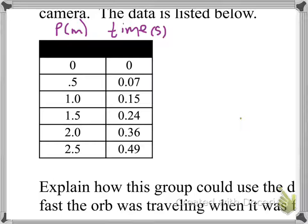What we really care about in this question is velocity. The first part says: explain how the group could use the data from the table to find how fast the orb is traveling when first shot upward. To graph the velocity we'll use position and time. Technically something shot up is accelerating, but since these time intervals are very close to each other, we can say acceleration doesn't have a whole lot to do with what's going on.